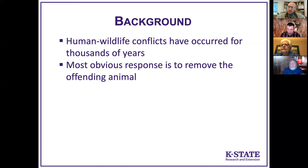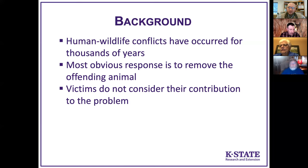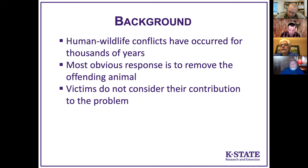Often the most obvious response is to remove the critter causing the problem — what we call the offending animal or culprit. But there are many different ways to deal with a human-wildlife conflict. Most of the time, victims — those affected by wildlife damage — don't consider how they might be contributing to the problem. There are lots of things people do that actually encourage wildlife to be around the resources they want to damage.